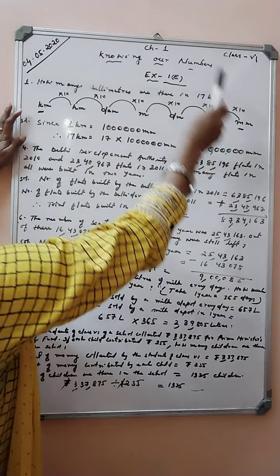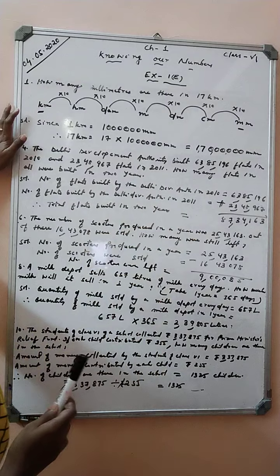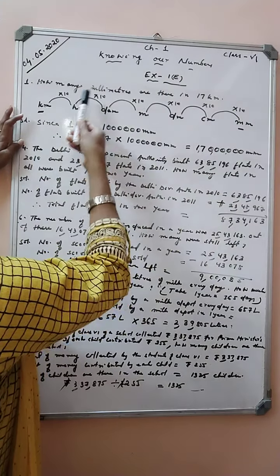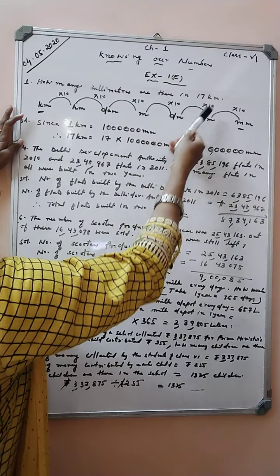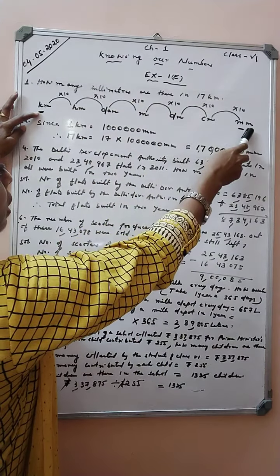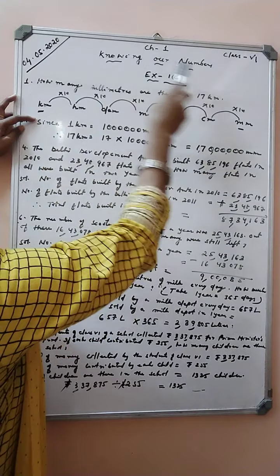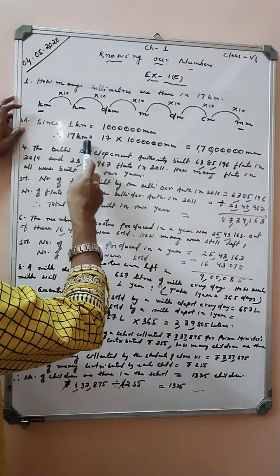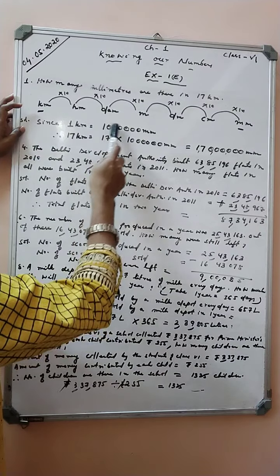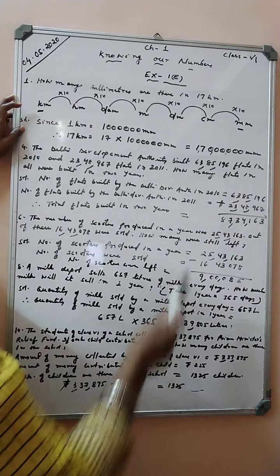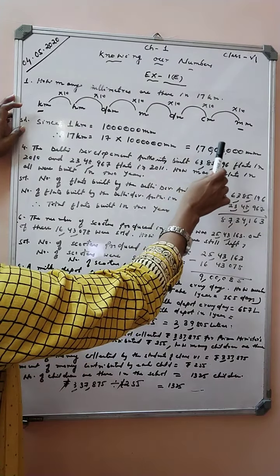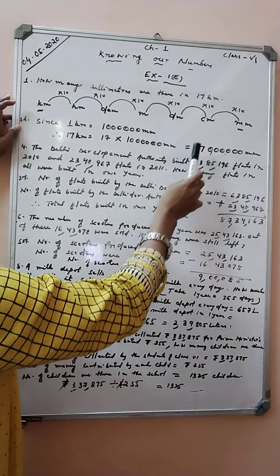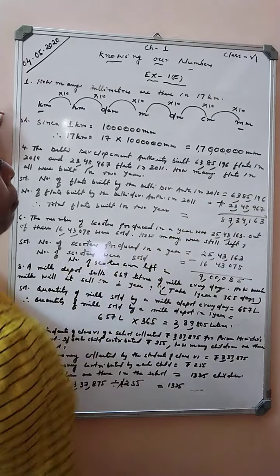Students, when we convert higher unit to lower unit, we always multiply. In this case, when we move from left towards right, we always multiply 10 at each step. Kilometer is here and millimeter is here. Since 1 kilometer equals 10 lakh millimeter, therefore 17 kilometer equals 17 into 10 lakh millimeter. Our answer will be 1 crore 70 lakh millimeter.